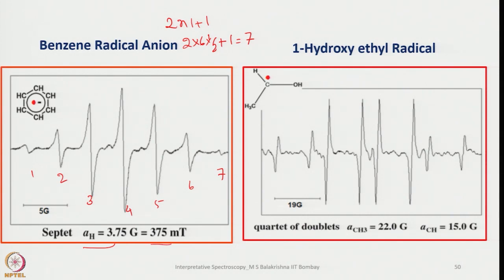Similarly, one can also look at the 1-hydroxyethyl radical. In this case we get a quartet of doublets — the electron first couples with the CH3 protons to give a quartet, and then each line in the quartet is split further by the OH hydrogen into doublets, giving a quartet of doublets.